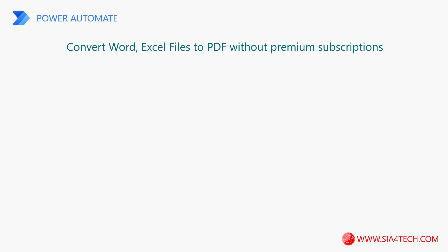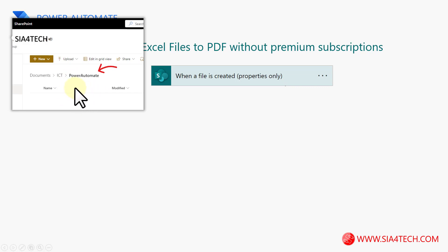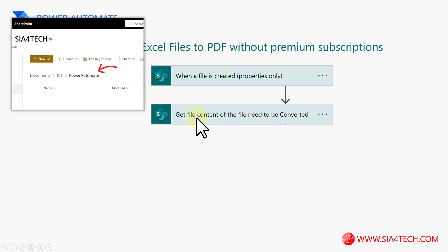For any flow to run we need a trigger. Here I want to run the flow when a file is created inside a folder on SharePoint, so I have to use the trigger called 'When a file is created.' For this scenario I have created a folder called 'Power Automate' inside a folder called 'ICT,' which belongs to the Documents library, so whenever a file is created or uploaded to this Power Automate folder, this trigger will run.